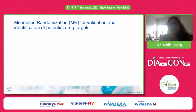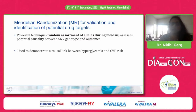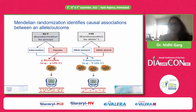Mendelian randomization is used for validation and identification of potential drug targets. It is a very powerful technique in which the random assortment of alleles during meiosis helps assess potential causality between a SNP and an outcome. It has been used to demonstrate the causal link between hyperglycemia and CVD risk. The best example is PCSK9 inhibitors: in 2005, Cohen et al. identified two nonsense mutations in PCSK9 which resulted in drastically lowered LDL, leading to the development of PCSK9 inhibitors. If the allele was absent, LDL decreased; if present, LDL increased.